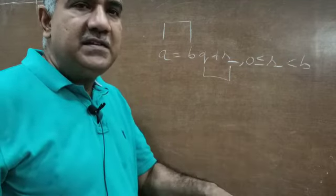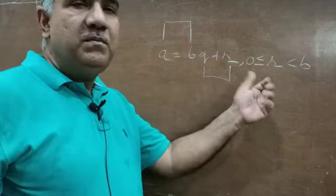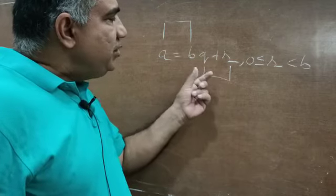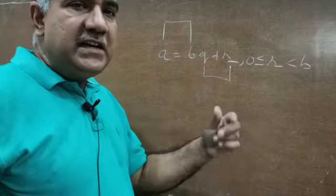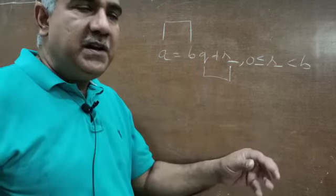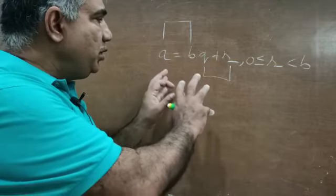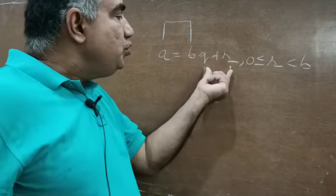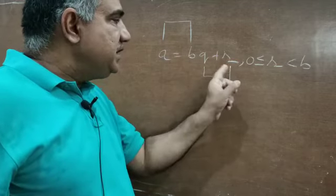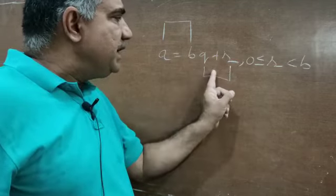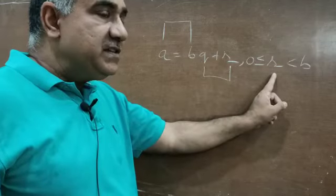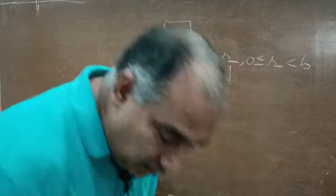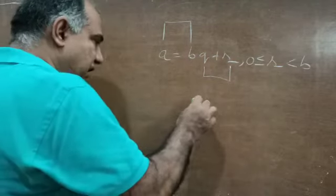This was the standard procedure for division which we have learned in primary classes, but writing in this form we must have come across for the first time. The word 'unique' is important here. Euclid's Division Lemma states that given two positive integers a and b, there exist two unique integers q and r satisfying a is equal to bq plus r, where r is less than b but can be equal to or greater than 0.